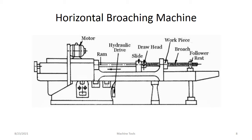Large horizontal broaching machines are widely used in the automobile industry to cut surfaces on large parts such as cast engine blocks, cylinder heads, manifolds, and bearing clusters. Also, slots, round holes, and other internal shapes can be efficiently machined with this type of machine.